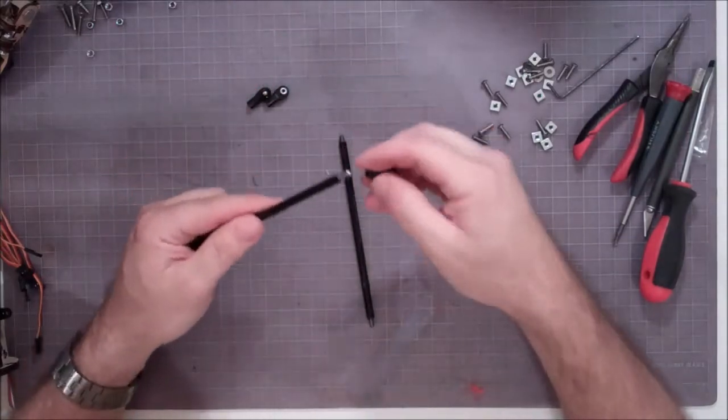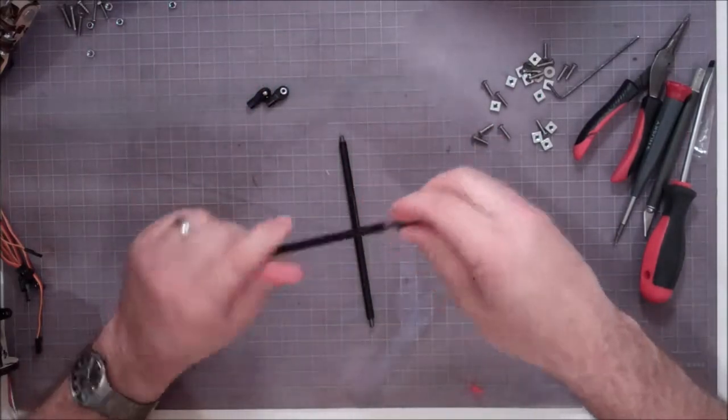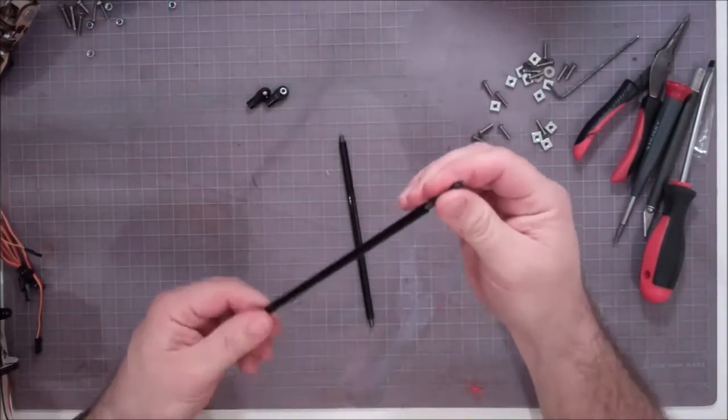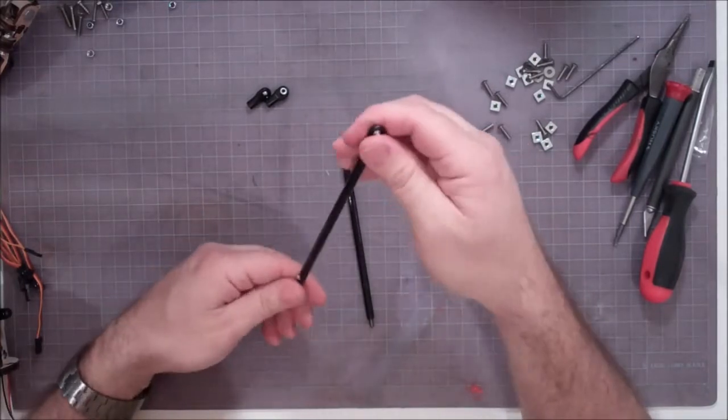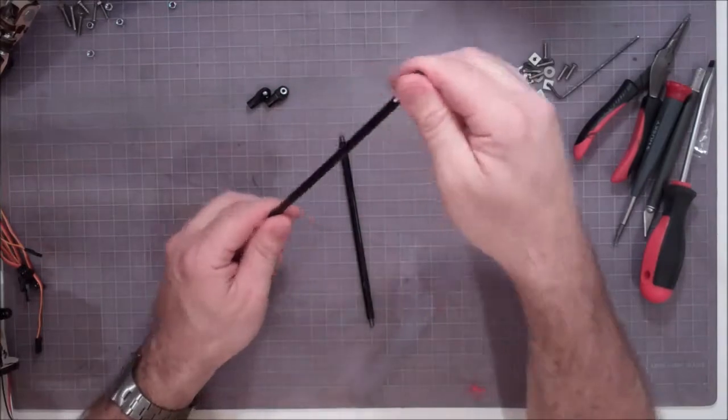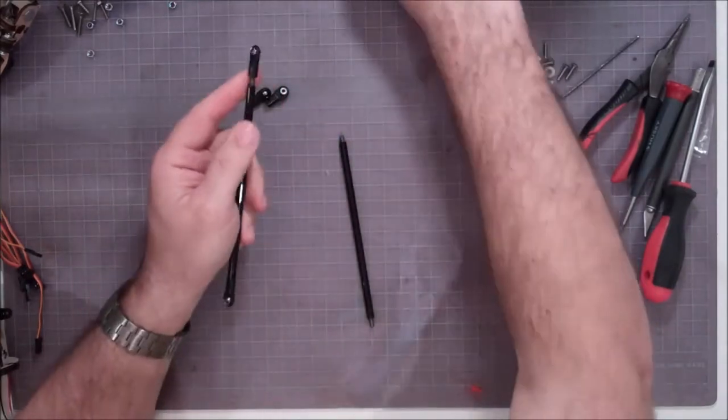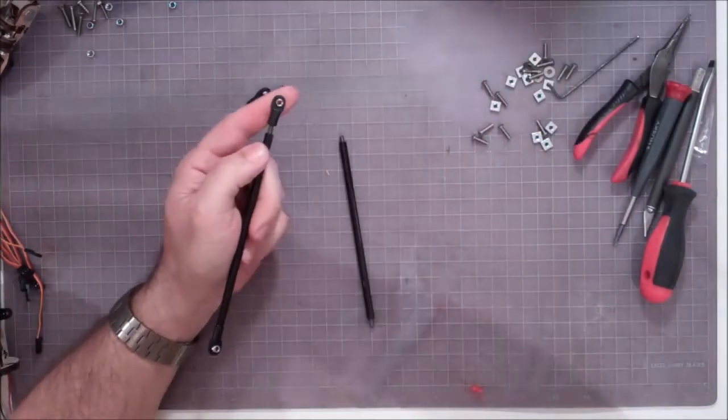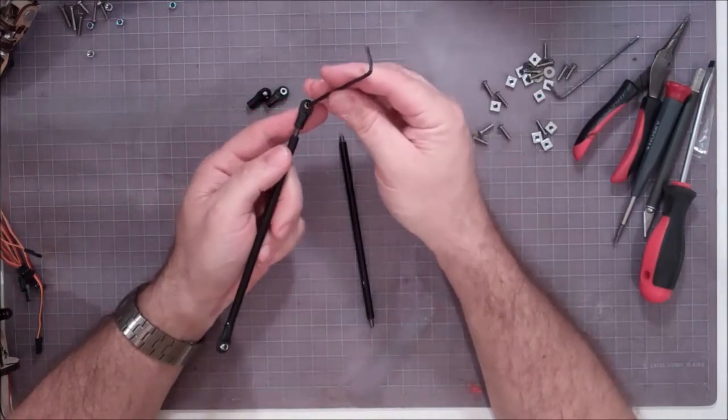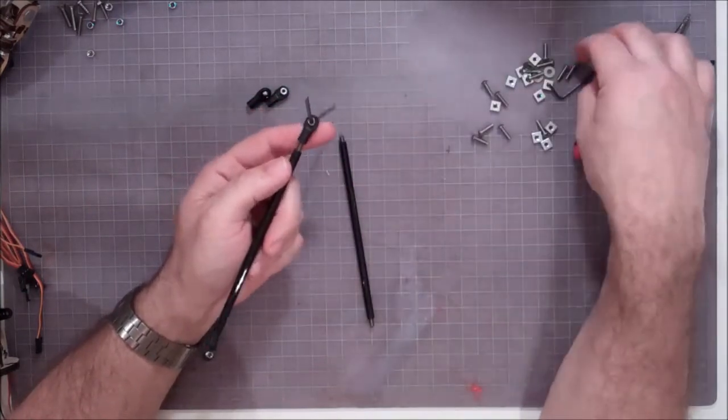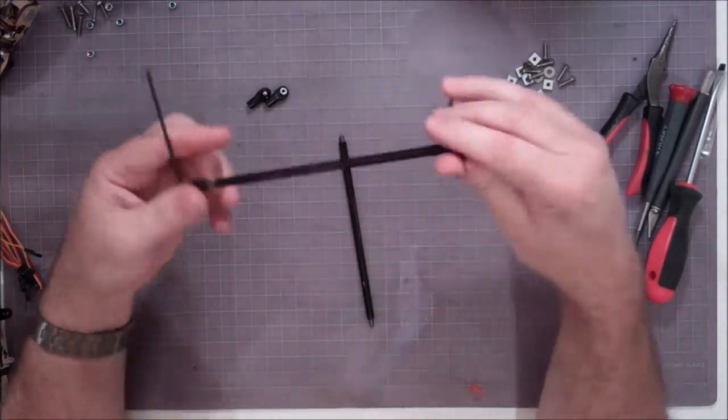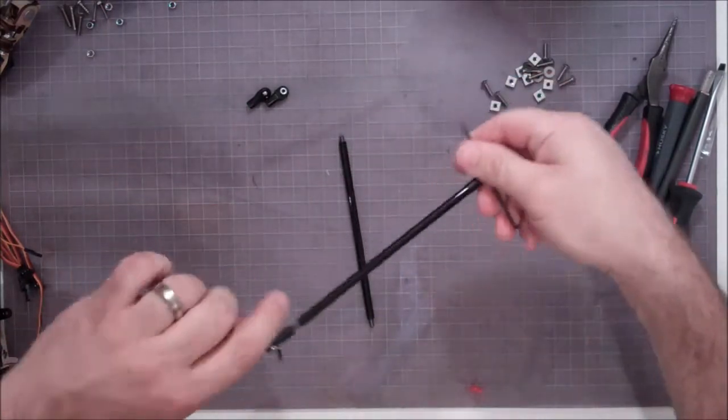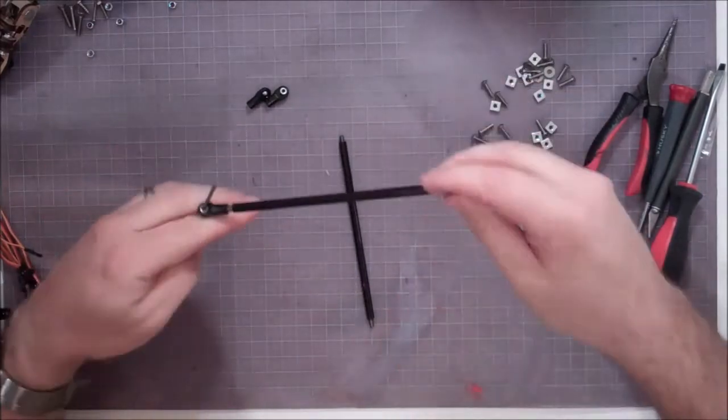Once you get one kind of started, I like to get the other one on, kind of get it started. Kind of give them a look and see if you can get them straight. They're pretty hard to get perfectly straight to tell you the truth, so I don't tend to worry about it too much. And then what I'll do is I'll take some of my Allen wrenches laying around and I'll drop an Allen wrench through each end. And that gives me a little something to hold on to while I twist them together.